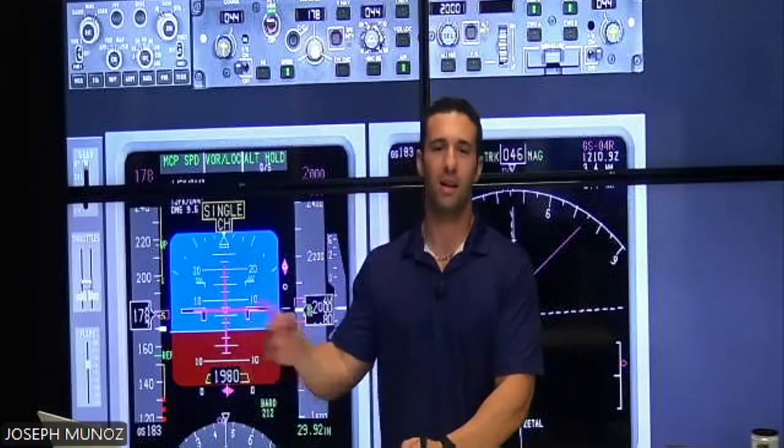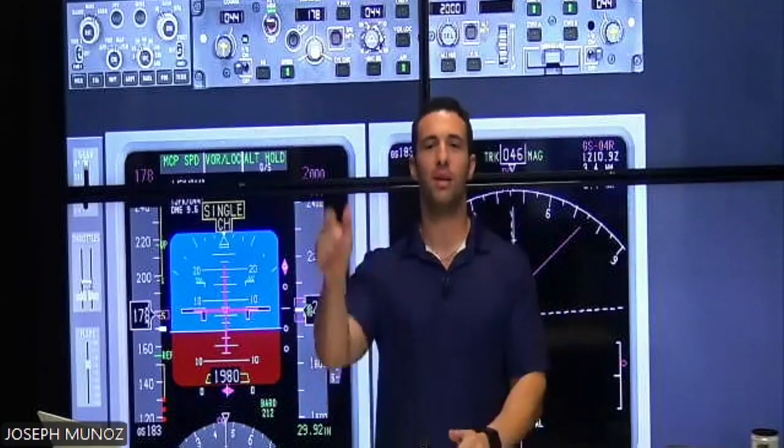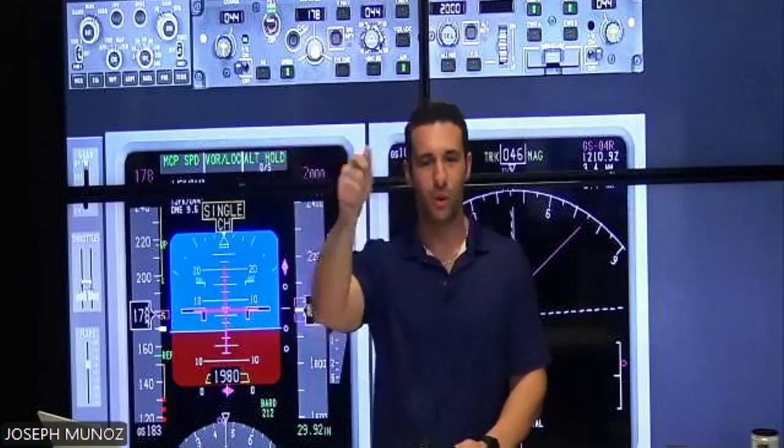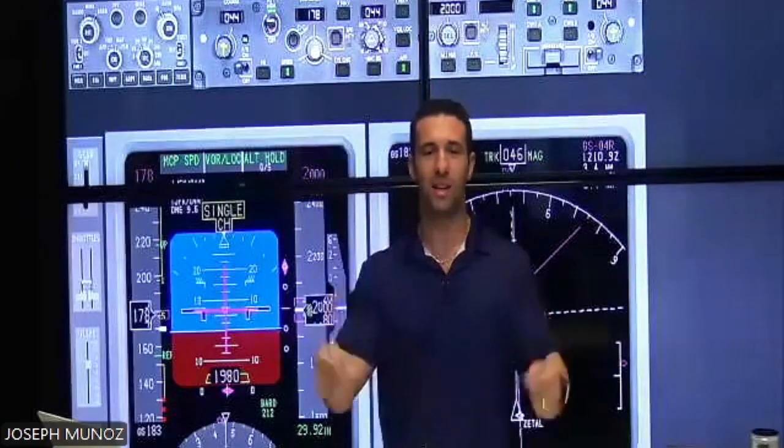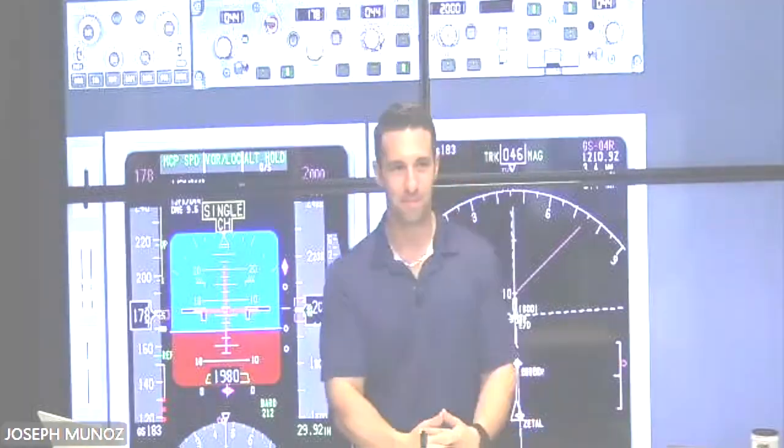In the Boeing, it's manual and it doesn't do that, which is why now at Glide Slope Alive, gear down, flaps 15, we have to put the start switches to continuous, meaning continuous ignition to protect our engines. Does that make sense? Okay.